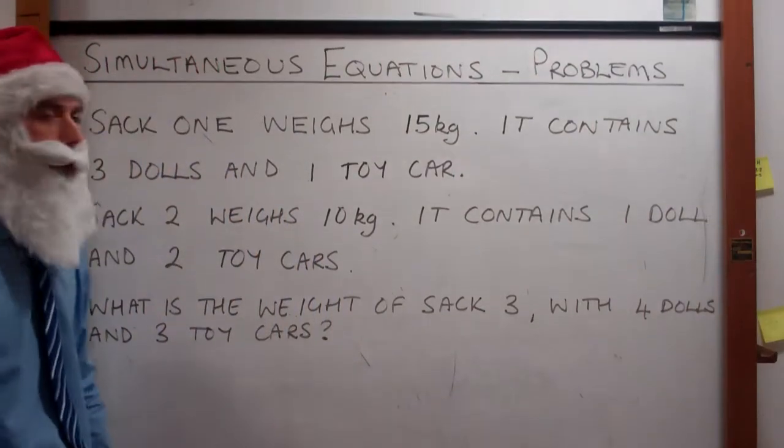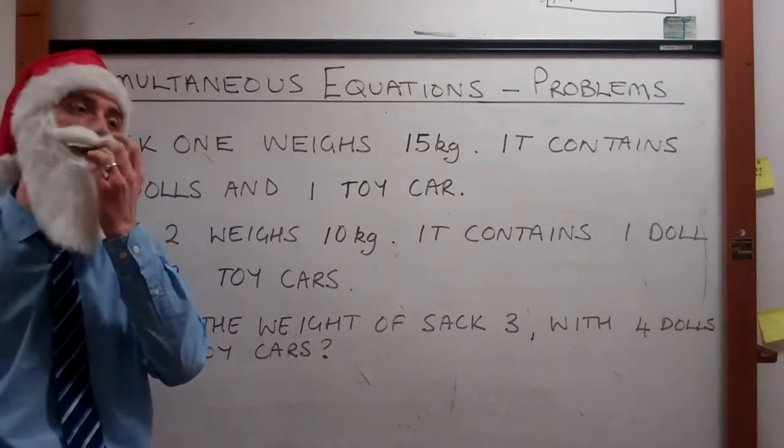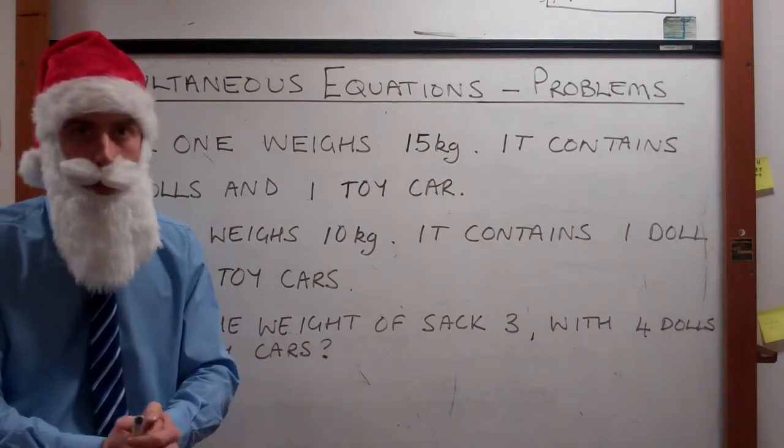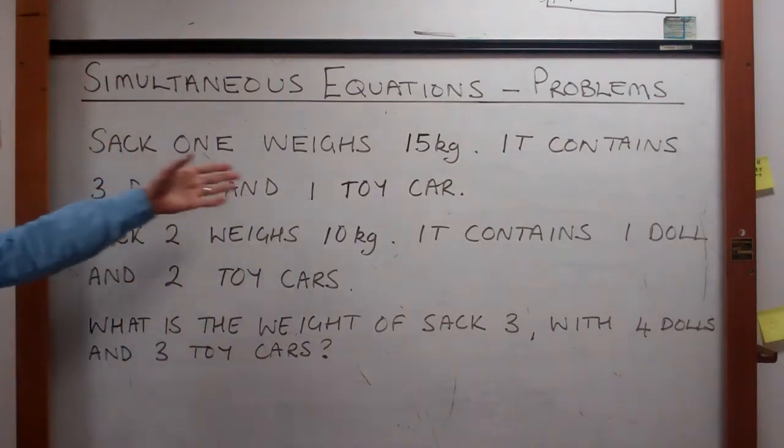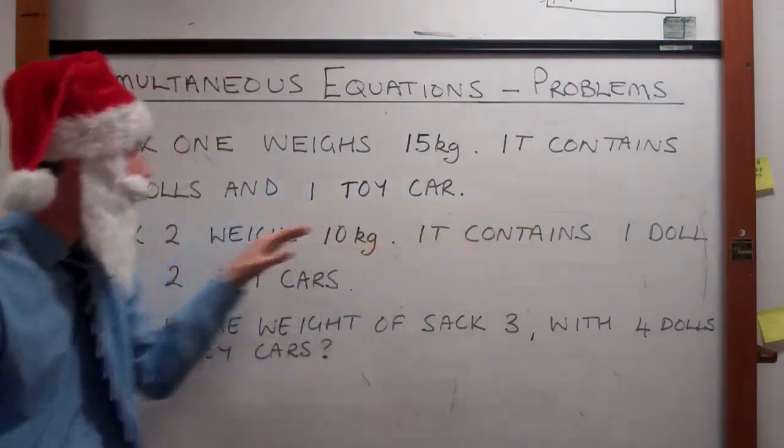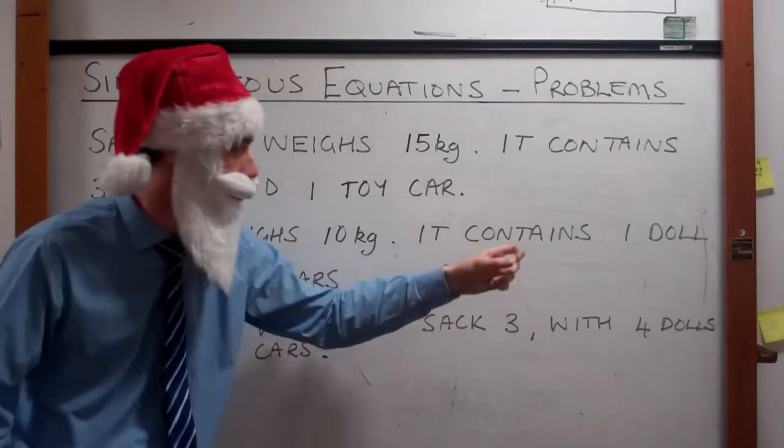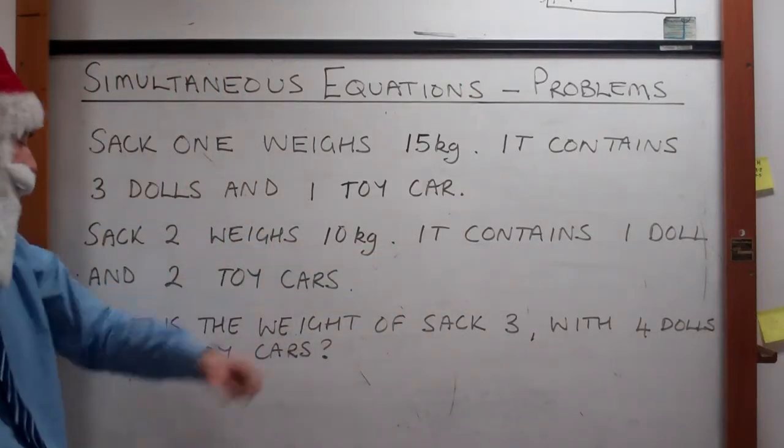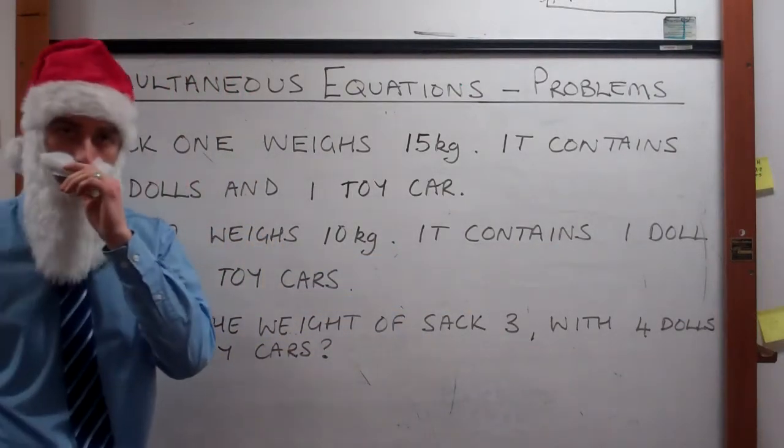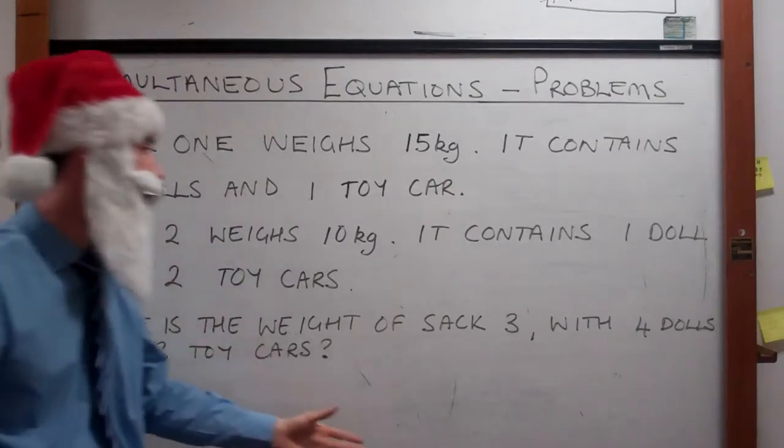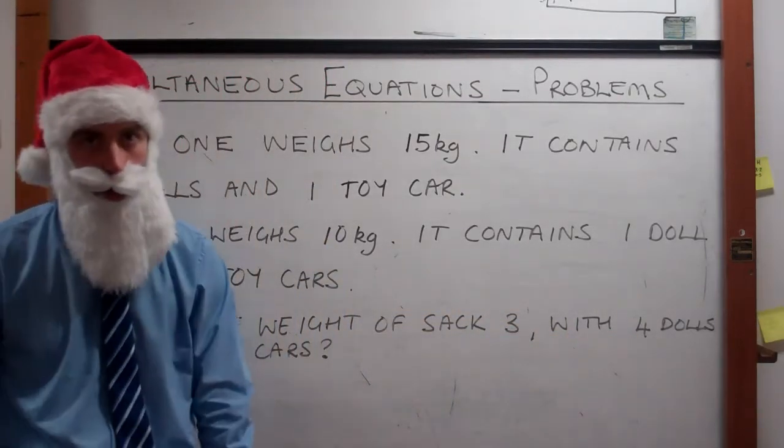So we have a little bit of a problem. We have sacks of toys and we need to know the weight of the contents before we can put them in the sleigh. Sack one weighs 15 kilograms and it contains three dolls and one toy car. Sack two weighs 10 kilograms and it contains one doll and two toy cars. What is the weight of sack three with four dolls and three toy cars?